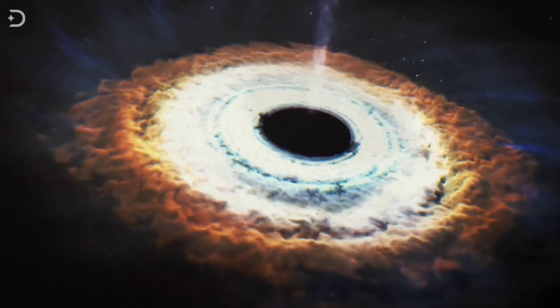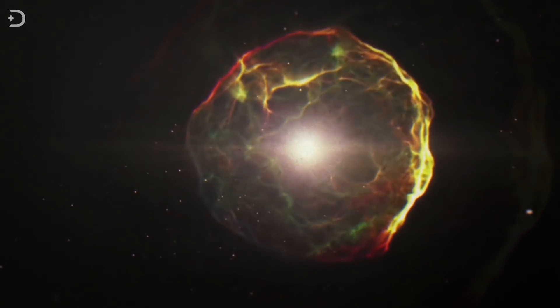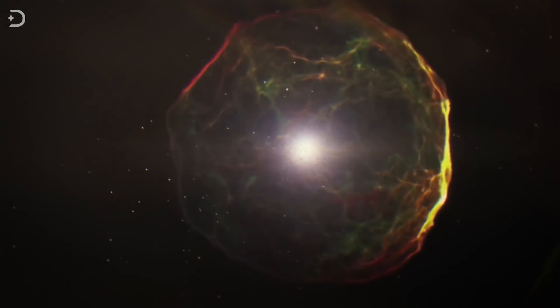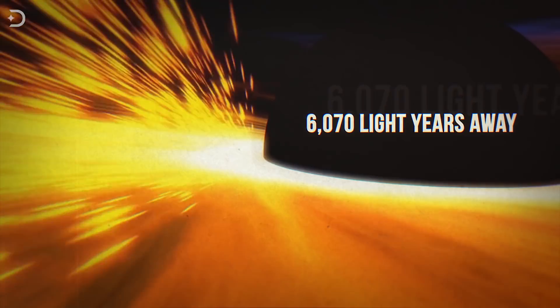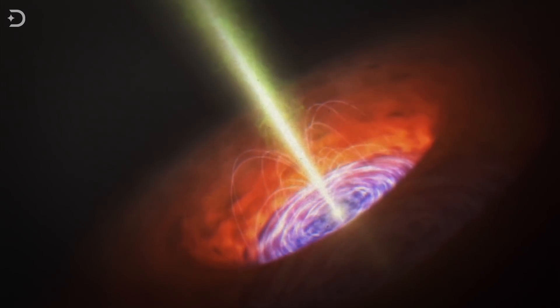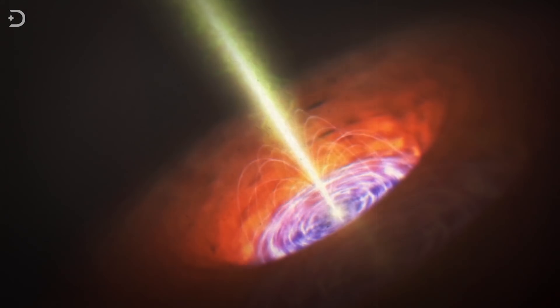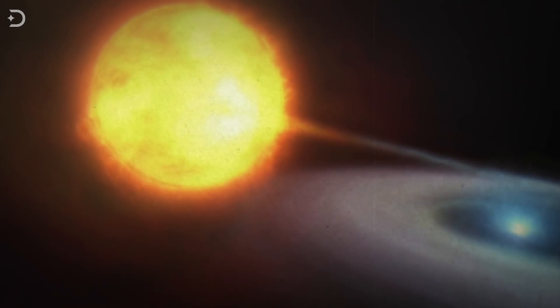Cygnus X1 has 14.8 times the solar mass of the Sun, but only measures 18 miles wide. It lies about 6070 light years away from us, and is the most brilliant, high-energy X-ray source in the heavens.